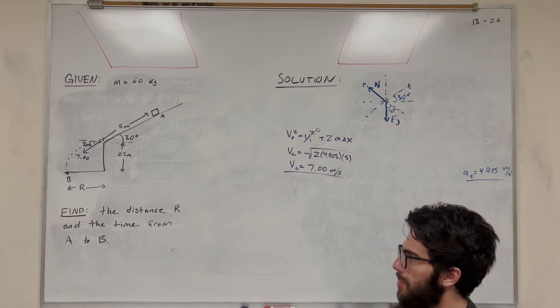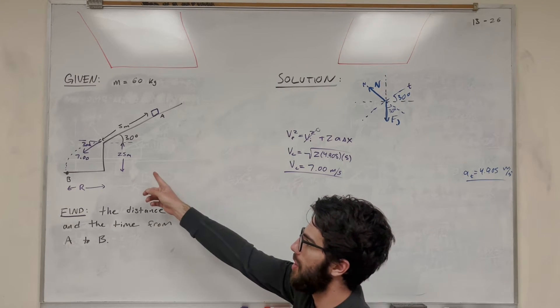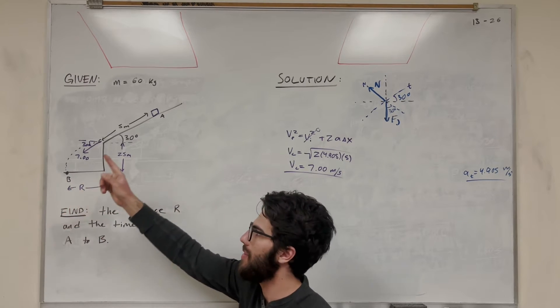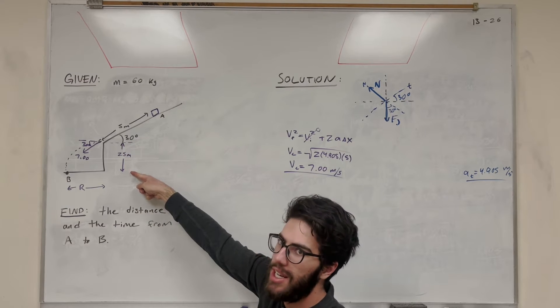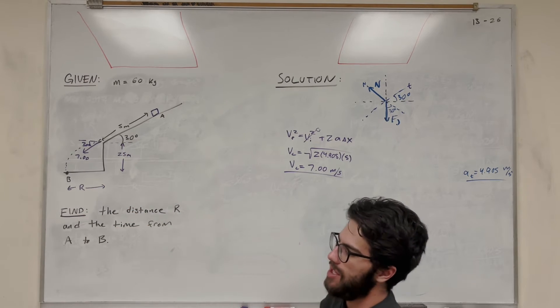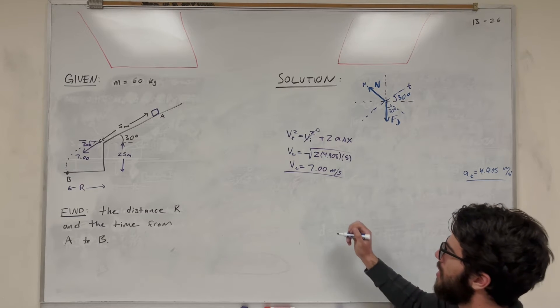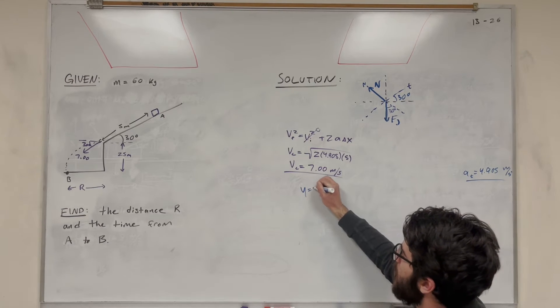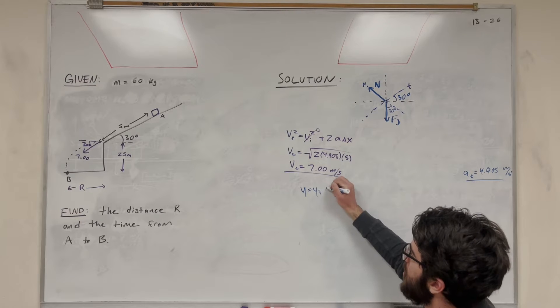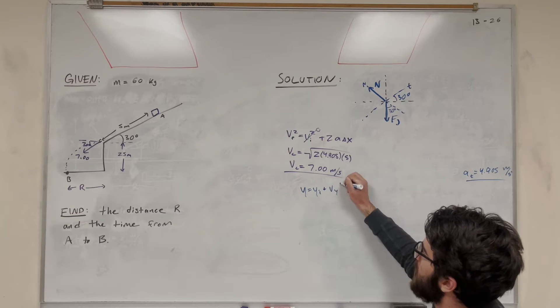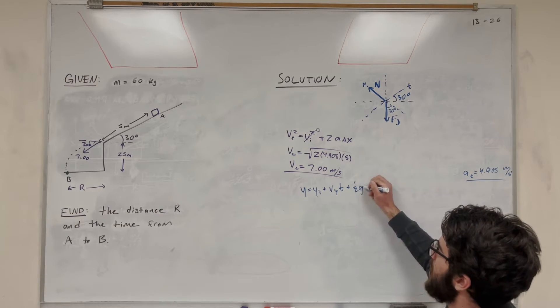Now we have basically a simple kinematics problem. So if we want to find how far the block travels, we basically want to find how long it takes to hit the ground, and then we're going to multiply that by its velocity in the X direction. So let's start by finding how long it takes to hit the ground. Our equation is going to be y equals y initial plus velocity y times time plus 1 half gravity times time squared.